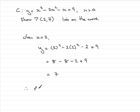Therefore, the point P(2,7) lies on C, lies on the curve C. So that brings us to the end of the first part of this question.